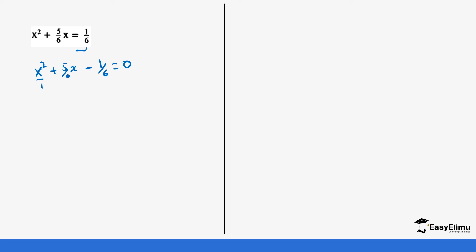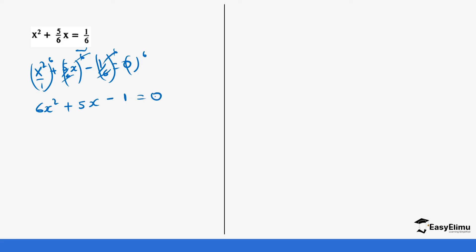We multiply every term by 6. Multiplying through: 6 times x² gives 6x²; 6 divided by 6 times 5x gives 5x, because the 6s cancel; and 6 divided by 6 gives 1, because the 6s cancel, so minus 1. This gives us 6x² plus 5x minus 1 equals zero.